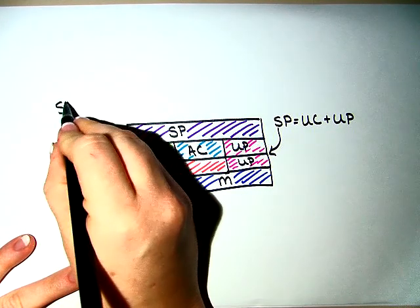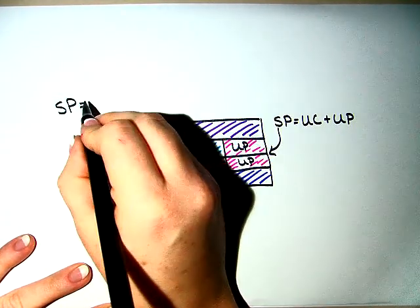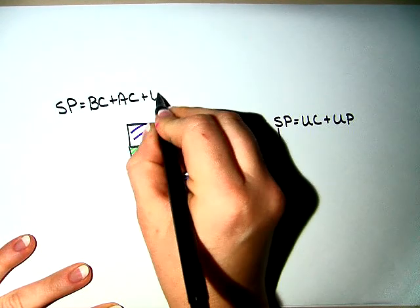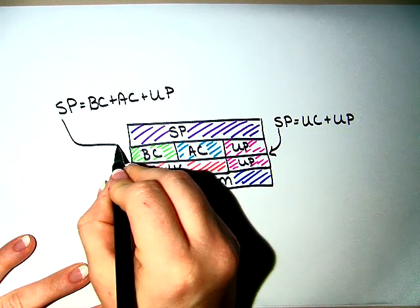Your selling price is also the buying cost plus the additional cost plus the unit profit, like here.